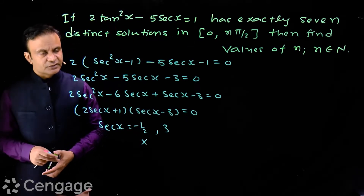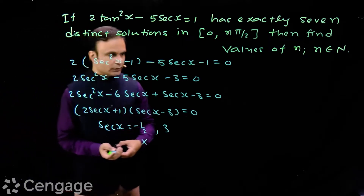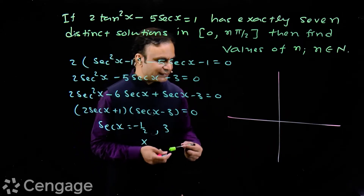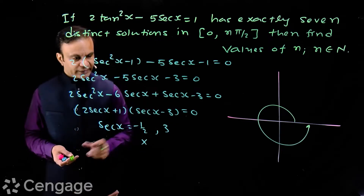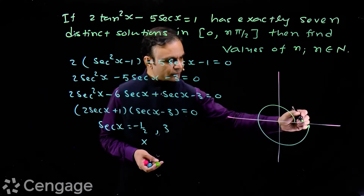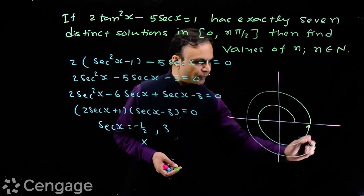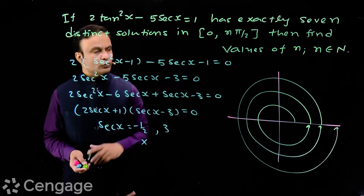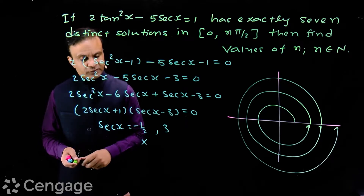We want this equation to have exactly 7 distinct solutions. That means for sec x = 3, we must have 7 distinct values of x. When we move from 0 to 2π, we have 2 values of x for which sec x = 3, since sec x is positive and x lies in either the first or fourth quadrant. From 2π to 4π we get 2 more solutions, and from 4π to 6π we get 2 more solutions. That means from 0 to 6π, we get 6 distinct solutions.